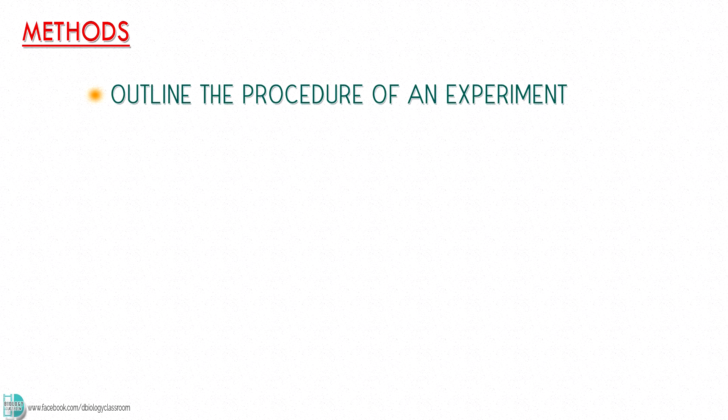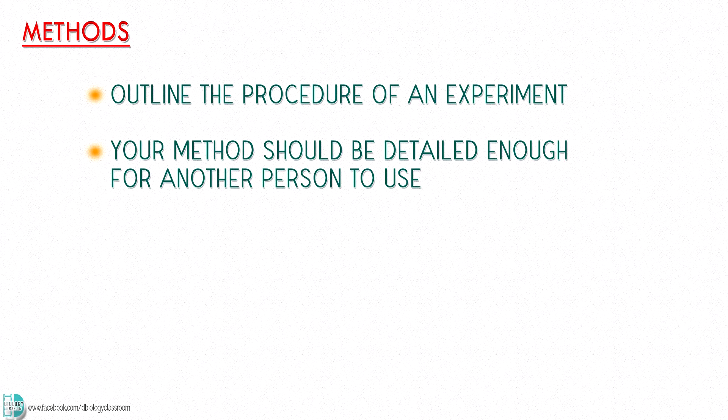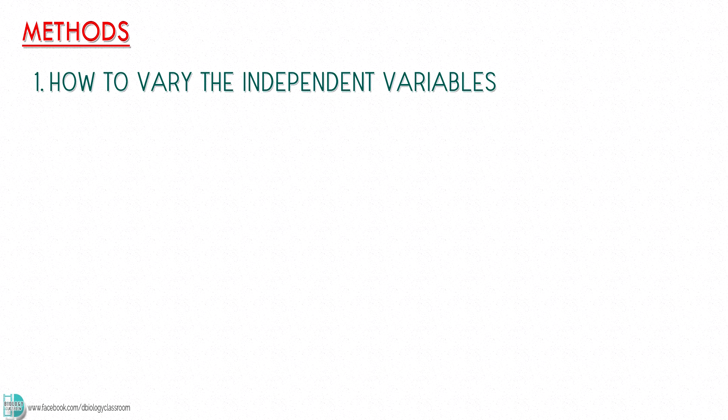In this part, you will be asked to outline the procedure of an experiment. Your method should be detailed enough for another person to use. There are six things that you should include in your answer. Number one, how to vary the independent variables. You will need to name the apparatus and the way to set it up.